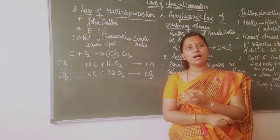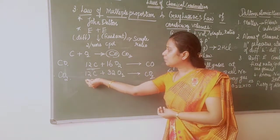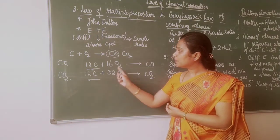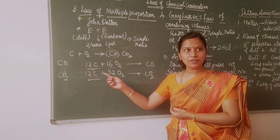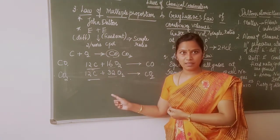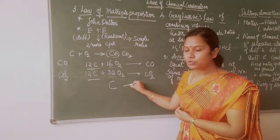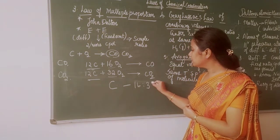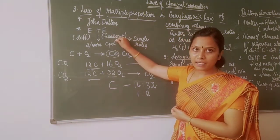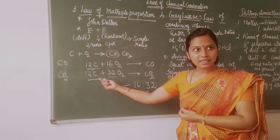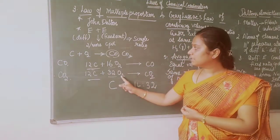To form carbon monoxide and carbon dioxide, the proportion of carbon is kept fixed at 12, while the proportion of oxygen differs — 16 parts in the first case and 32 parts in the second case. They bear a simple ratio: keeping carbon fixed and varying the oxygen composition gives a ratio of 16 to 32, which is 1 to 2. So the fixed element here is carbon, and the differing element is oxygen.